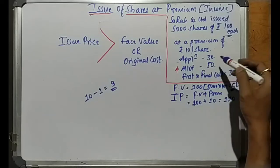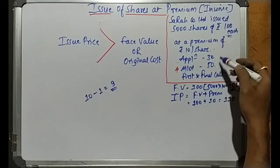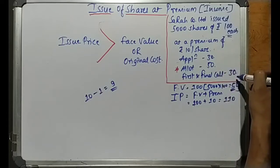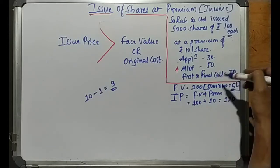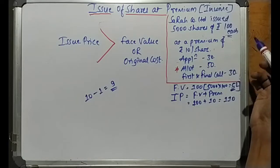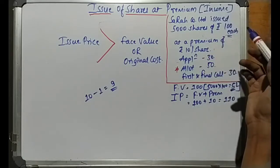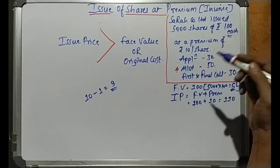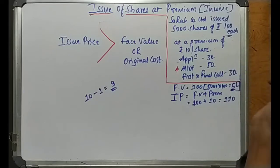This amount is being collected in stages: on application they are collecting rupees 30, on allotment they are collecting rupees 50, and on first and final call they are collecting rupees 30. We are asked to pass the general journal entries, assuming that all the necessary calls were made and the money was duly received.